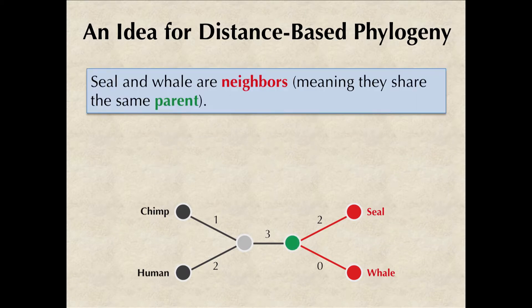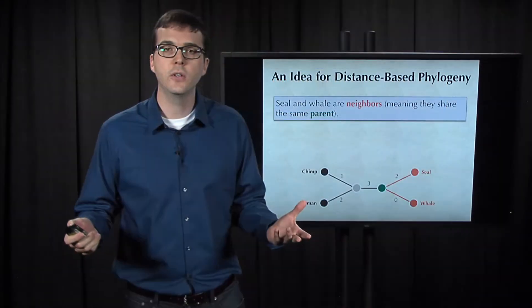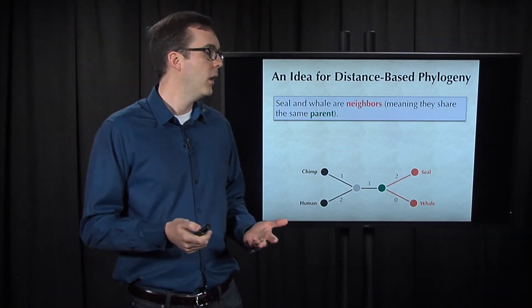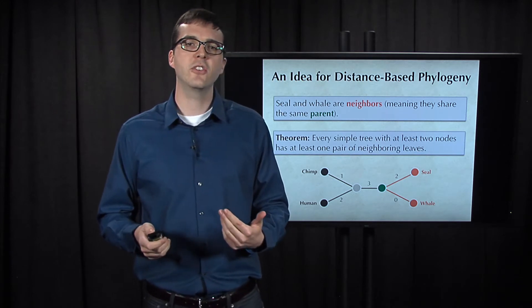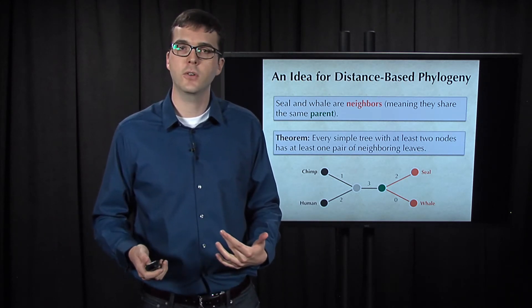We call such leaves neighbors. Formally this means that they share the same parent node, where a parent is the unique node that a leaf is connected to. Of course, more than two leaves could share the same parent. But the good news is that we can always find a pair of neighboring leaves in a tree.